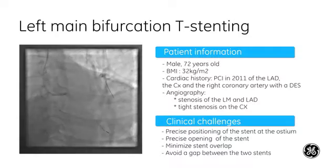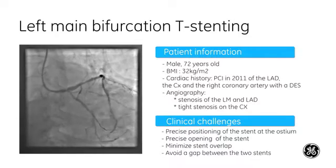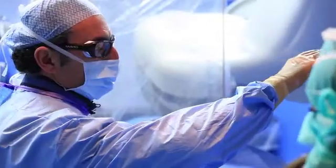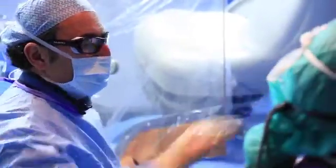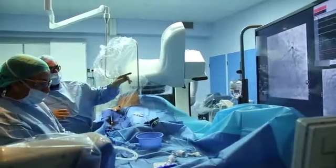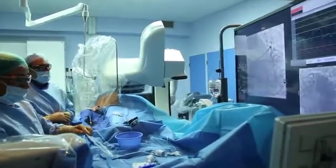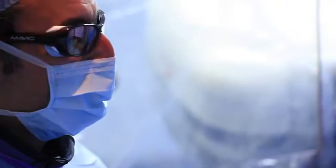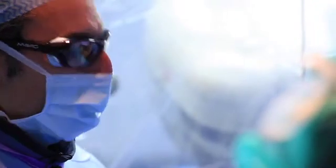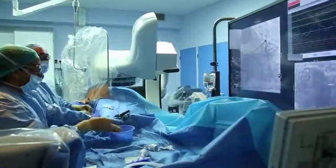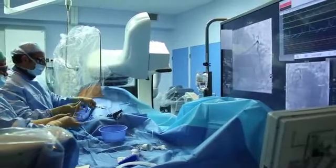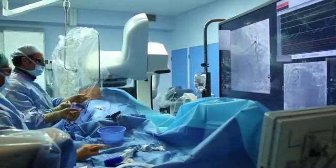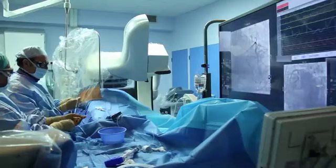What is your strategy? So the strategy will be to stent the left main and going to the LAD with a jail wire on the circumflex, and then we will open the strut of the circumflex and change the wire before. So let's go to stenting of the LAD and the left main.